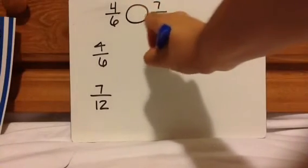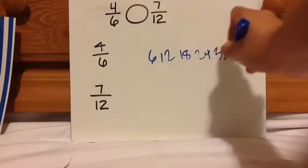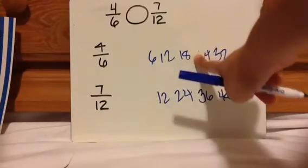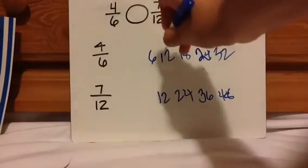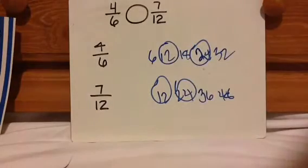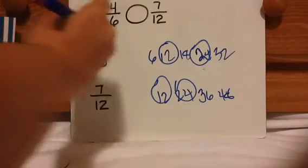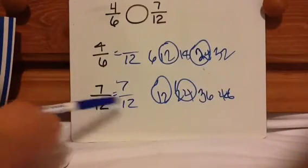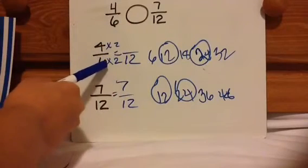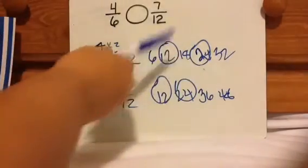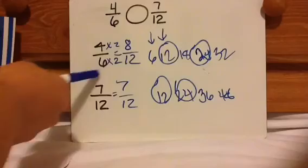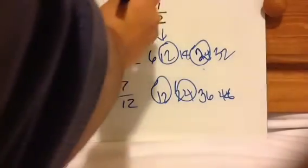My first step is skip count by sixes: six, twelve, eighteen, twenty-four, thirty. Skip count by twelves: twelve, twenty-four, thirty-six, forty-eight. I notice they both have twelve in common — they also have twenty-four. Really and truly you can use both, but I always like to use the closest because the multiplication steps are easier. So I'm going to set both equal to twelve. This one I don't have to do anything because it's already the same denominator, but this one is times two. So four-sixths is equivalent to eight-twelfths, and seven-twelfths is seven-twelfths. Eight-twelfths is more than seven-twelfths, therefore that one's bigger.